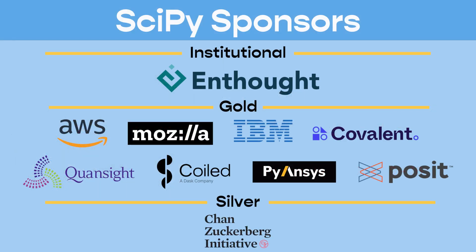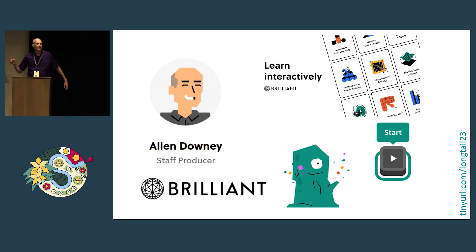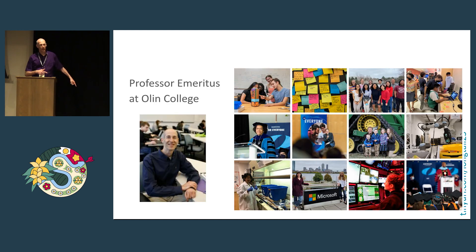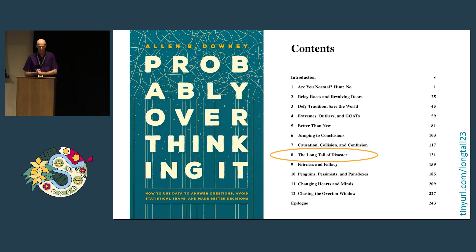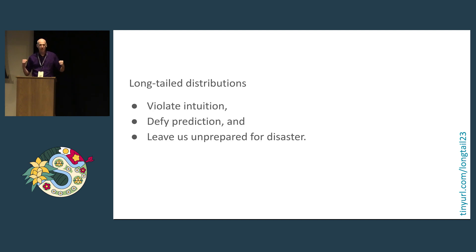Thank you for coming to my talk about long tail distributions. I'm Alan Downey. I'm a producer at Brilliant, which means that I write online courses. And I was, for a long time, a professor at Olin College. I'm also working on a book called Probably Overthinking It. What I'm talking about today is chapter eight from this book. It is about long tail distributions, and my claim is that these are common in natural and engineered systems. They violate our intuition, they defy prediction, and they leave us unprepared for disaster.